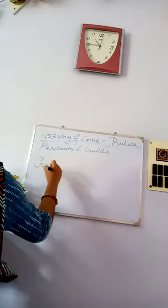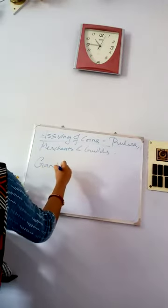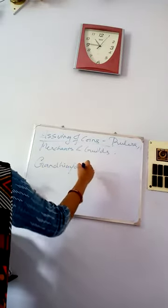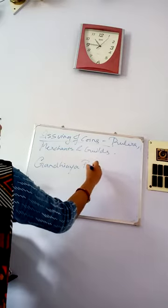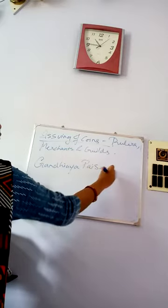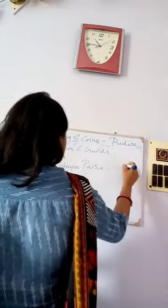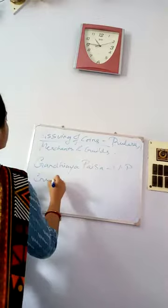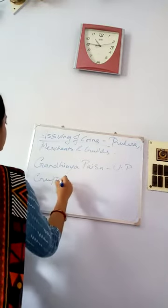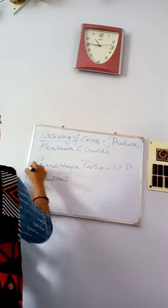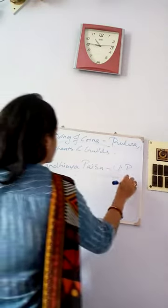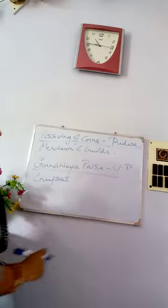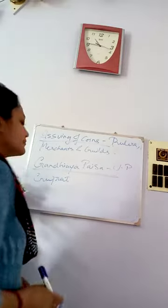Next is Gandhi Paisa. This kind of coin is mostly found in Uttar Pradesh and Gujarat, and is also a form of currency that has been recovered from those regions.